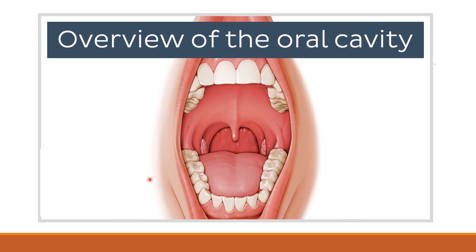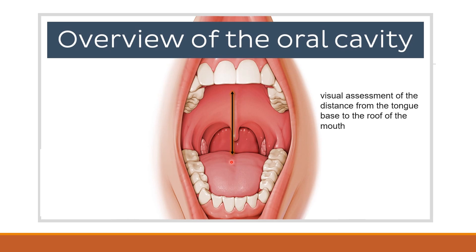Before we get to know about the Mallampati score, it is very important to know an overview of the oral cavity. The key structures include the facial pillar, uvula, soft palate, and hard palate. This test or score gives us a visual assessment from the base of the tongue and the distance to the roof of the mouth.